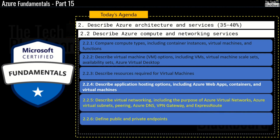And in the coming episodes, we are going to cover section 2.2.5 — describe virtual networking, including the purpose of Azure Virtual Networks, Azure Virtual Subnets, Peering, Azure DNS, VPN Gateway and ExpressRoute. Then finally, we will also cover section 2.2.6, which is to define public and private endpoints.